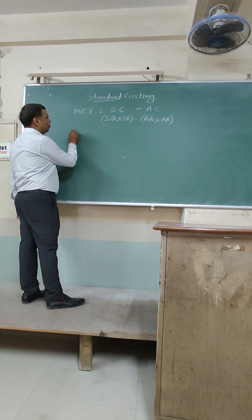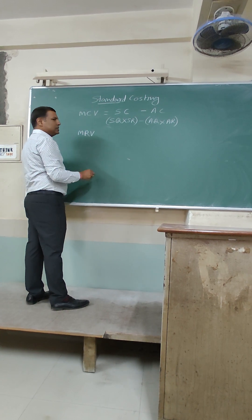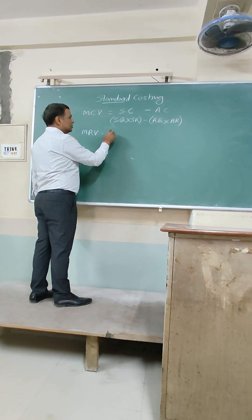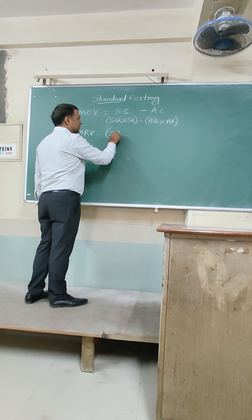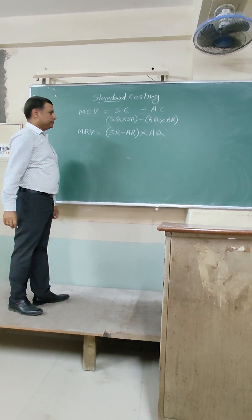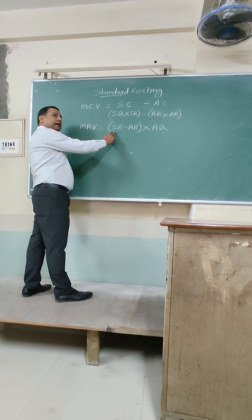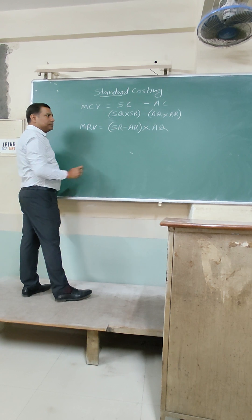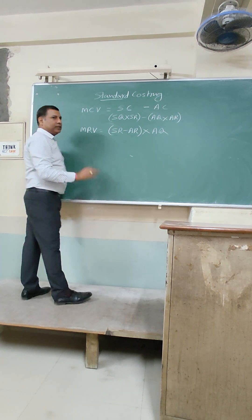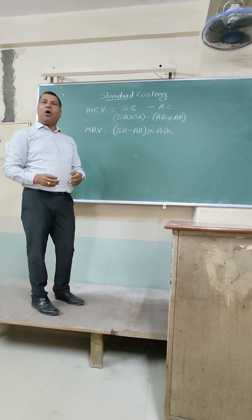The second variance we need to find out is material rate variance — also called material price variance. Material rate variance is found by taking the difference of standard rate minus actual rate, multiplied by actual quantity. This tells us what the predetermined rate was versus what cost we are actually incurring for the material. The difference between standard and actual, multiplied by the actual quantity being produced, tells us whether we have a favourable or unfavourable cost.